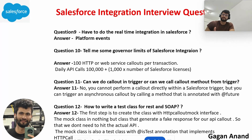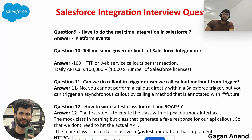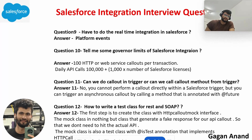Tenth question: tell me some governance limits of Salesforce integration. One limit already discussed is 100 callouts per transaction. The second is the daily API call limit, which is 100,000 plus — the calculation is number of licenses multiplied by 1,000, generally around 100,000 to 120,000 callouts per day. If you need to increase that daily limit, you have to add more licenses. But remember: in a single transaction, you can only make 100 callouts.